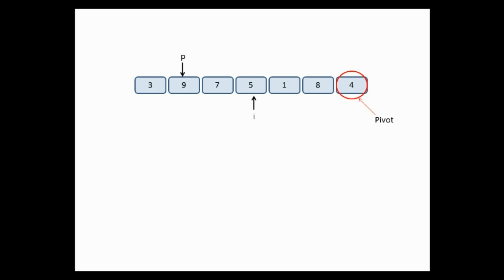P is incremented by 1, and I moves one step ahead to the fourth element. Now 5: 5 is not less than 4, so no swapping takes place and I moves to the next location. Then 1: 1 is less than 4, so the element at I and the element at position P are swapped — 1 comes to the second position and 9 goes to the third-last position.